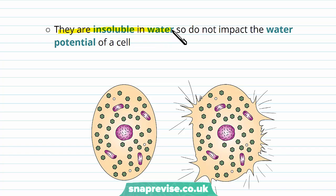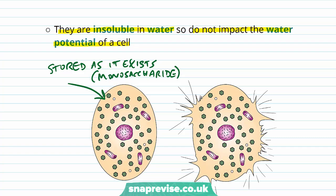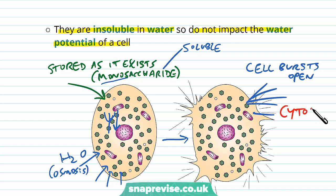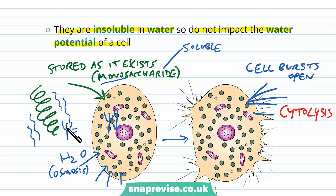Another reason they're good at storing energy is because they're insoluble in water — they don't dissolve. Because of this, they don't make any impact on the water potential of a cell. If cells stored alpha glucose as it is floating around the cytoplasm, because it's very soluble as a monosaccharide, the water potential of the cell would go down. As a solute, it brings water potential down, meaning water would be drawn in by osmosis through the membrane. If too much water is drawn in, the cell bursts and dies in a process known as cytolysis. Instead, cells store it as long polysaccharides which don't dissolve in water, so the water potential stays the same and the cell is safe.